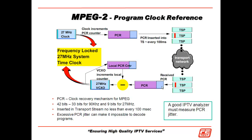If that 100-millisecond interval varies too much, like 40 milliseconds, the receiving end is going to run out of buffer space looking for that program clock reference. We call this PCR jitter — the variability of arrival of that program clock reference relative to every 100 milliseconds. If we get too much jitter, we won't be able to stay phase-locked between the two systems. So a good IPTV analyzer needs to measure that PCR jitter.